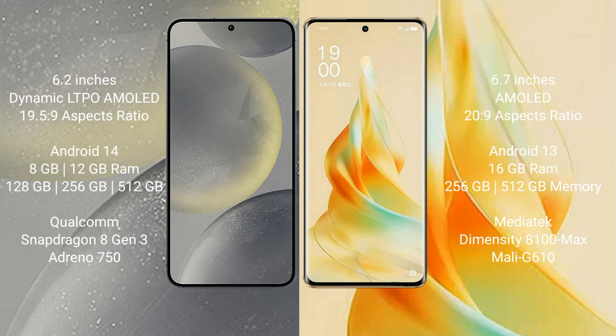Samsung Galaxy S24 runs on the Android 14 operating system, while OPPO Reno 9 Pro runs on the Android 13 operating system.